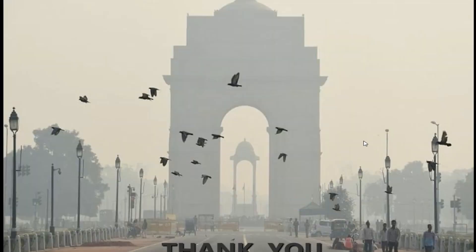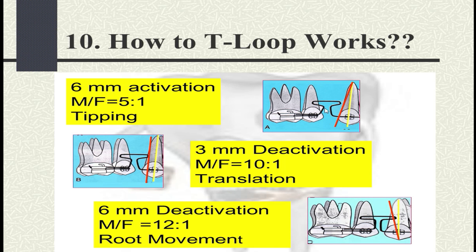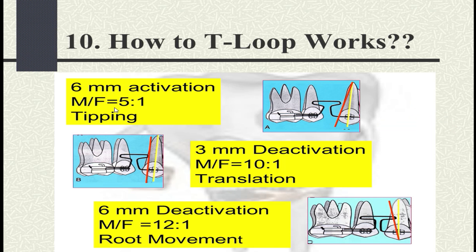How does the T-loop work? The T-loop works on the principle of moment and force. If you stretch the T-loop and lock it, there is a horizontal component that pushes the teeth back. Initially, tipping occurs. With 6 mm of activation, it produces more force and less moment, so tipping movement occurs first. As the tooth tips, the force decreases and the counter-acting moment increases, causing uprighting and translation. Later, at 6 mm of deactivation, the distance between the legs has decreased, so root movement occurs — there is no horizontal force remaining, only a second-order effect causing the root to tip distally.